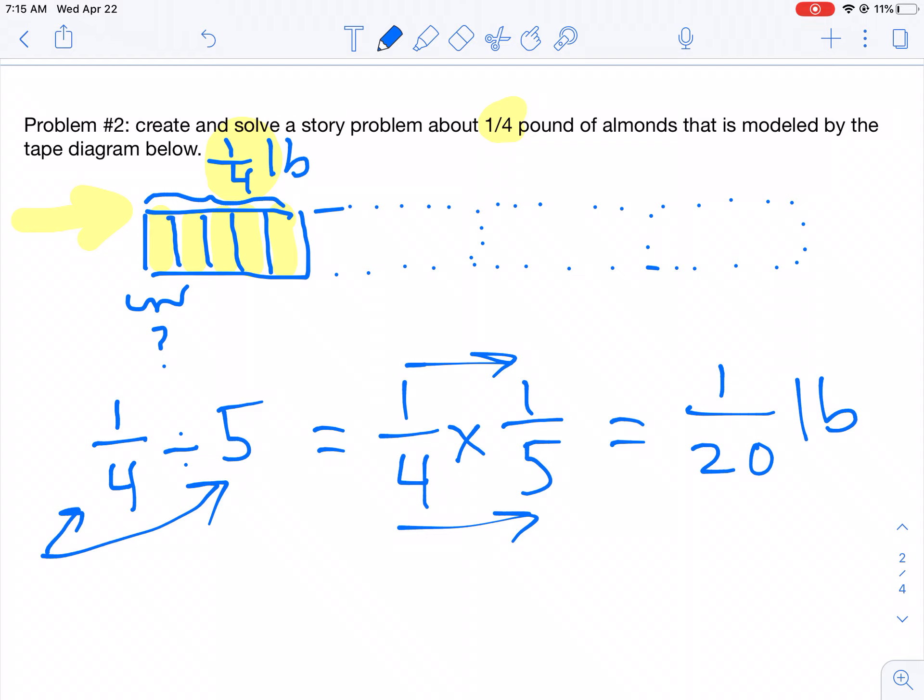So how can we check our work? How do I know that one-twentieth of a pound is correct? Very good, you remembered. You have to multiply the answer and the divisor.